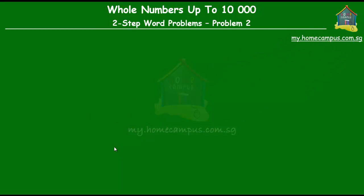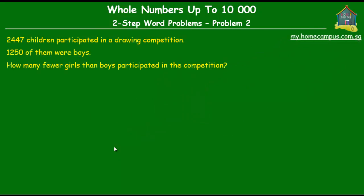Hello and welcome to my.homecampus.com.sg. Let's solve this two-step word problem on whole numbers. The question is: 2,447 children participated in a drawing competition. 1,250 of them were boys. How many fewer girls than boys participated in the competition?